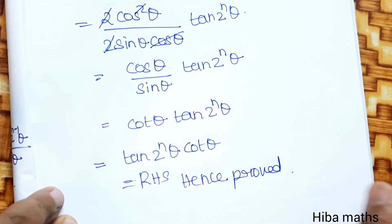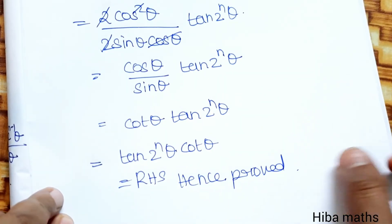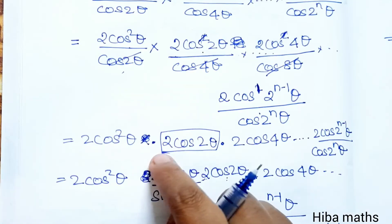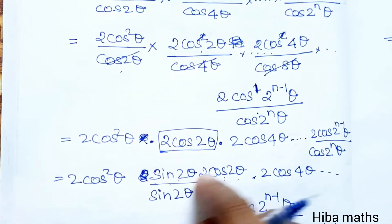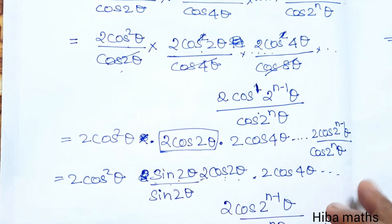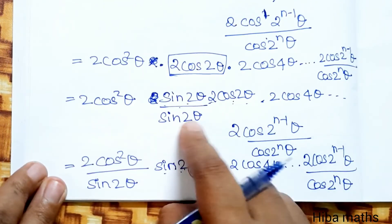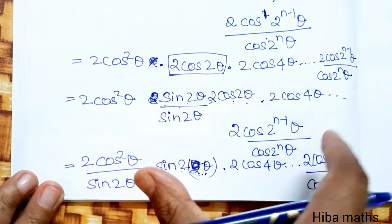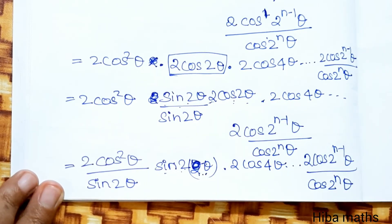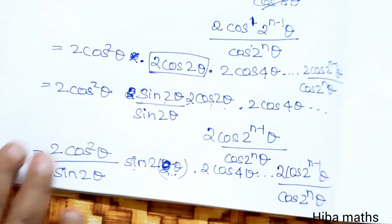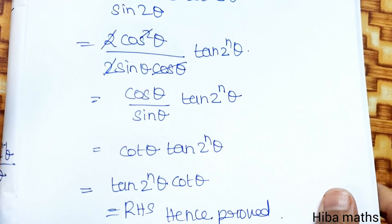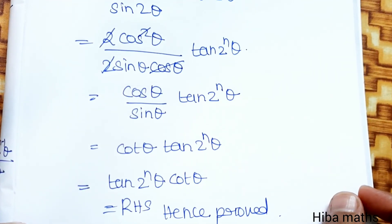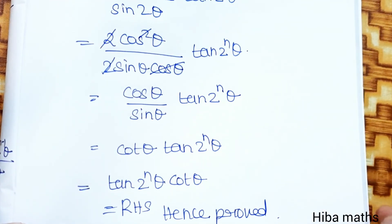Using tan2θ this will be very easy. This is our RHS part. Thank you so much for watching.